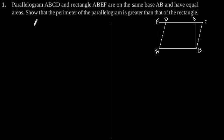Exercise 9.4 Question number 1. Parallelogram ABCD and rectangle ABEF are on the same base AB and have equal areas. Show that the perimeter of the parallelogram is greater than that of the rectangle.